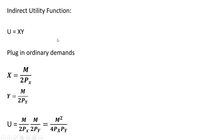Next, let's get the indirect utility function. We have our utility function — let's just plug in the ordinary demands into it. For X we plug in the demand for good X, and for Y we plug in the demand for good Y. Doing that and simplifying, we have the indirect utility function.